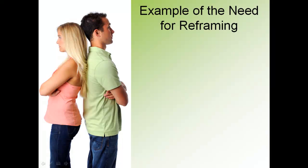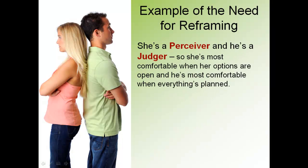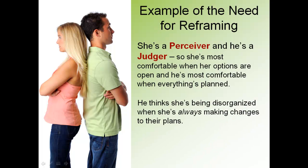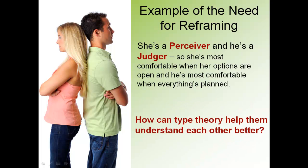Here's an example of the need for reframing. She's a perceiver and he's a judger, so she's most comfortable when her options are open and he's most comfortable when everything's planned. This leads to a problem: she thinks he's being inflexible when he doesn't want to make any changes to their plans, and he thinks she's being disorganized when she's always making changes. How can type theory help them understand each other better?